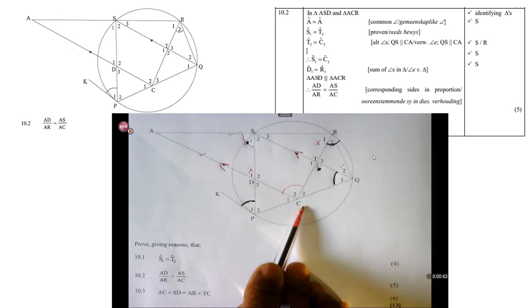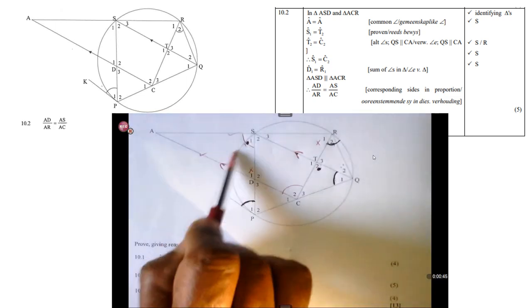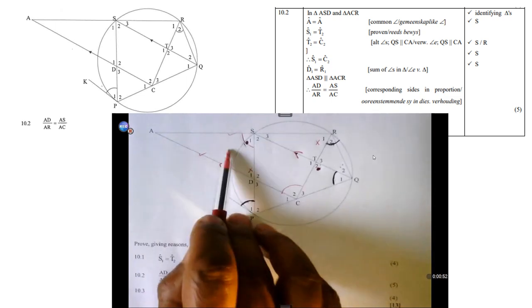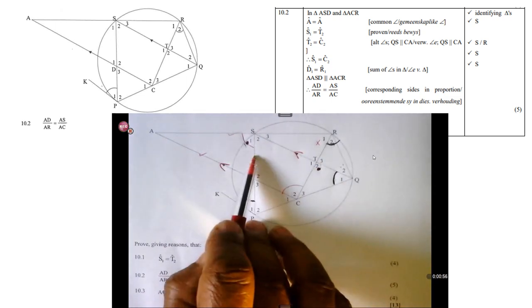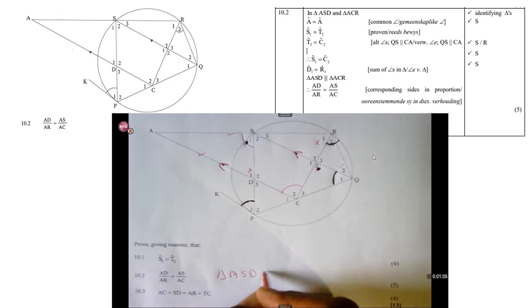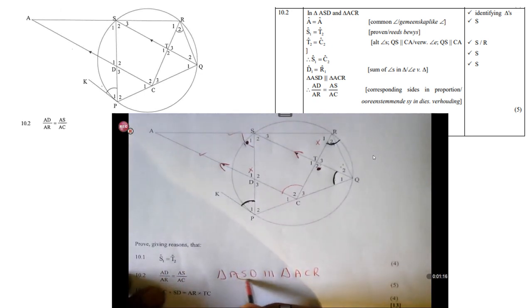So in triangle ASD, so it's this one here, ASD, and triangle ACR, you will see the overlap. So let's prove them similar. Because if I prove them similar, it is really going to help me. I must prove triangle ASD similar to triangle ACR. Because the naming is perfect, because remember this comes from the naming, like AD over AR equals AS over AC. So if I can prove them similar, then I can make this deduction. So let's get started.